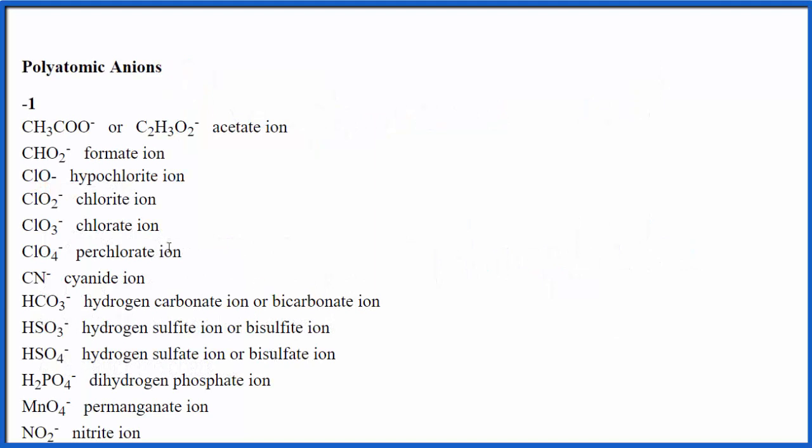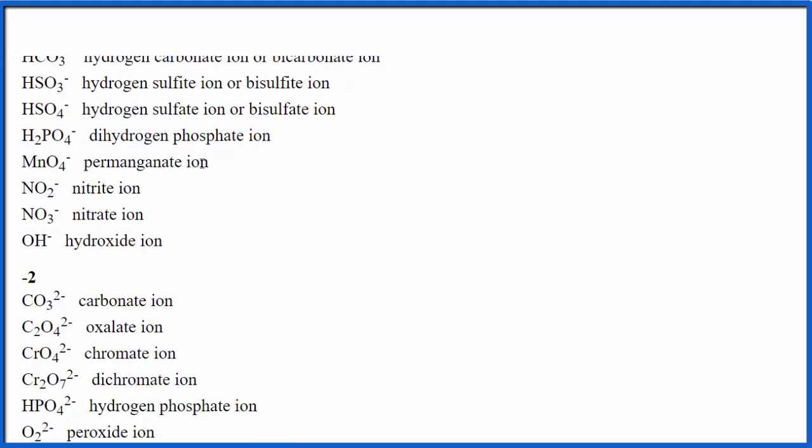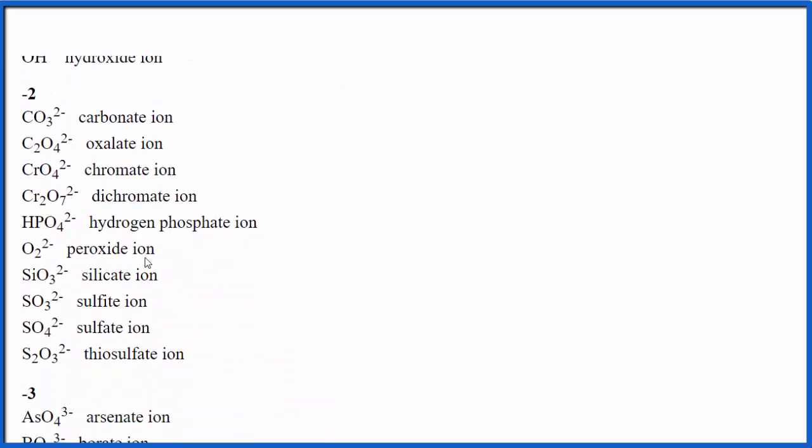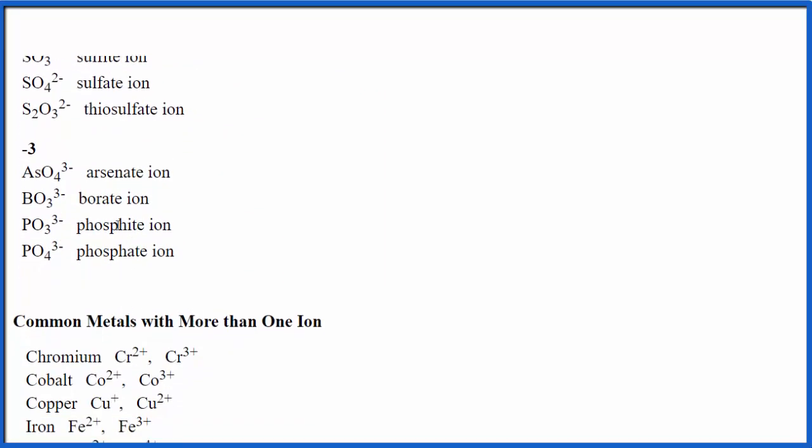So as we scroll down the table, we come down here. We have permanganate, that's not it. Peroxide, no. Phosphite. So the phosphite ion is PO3 3-.